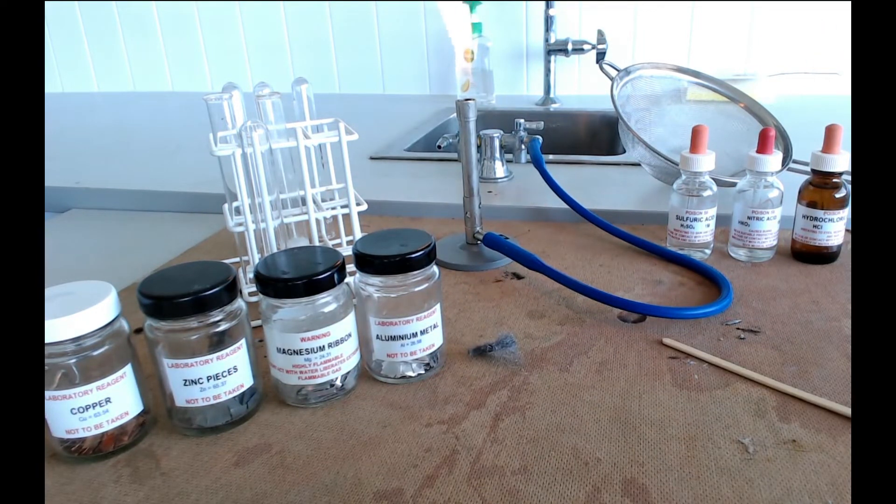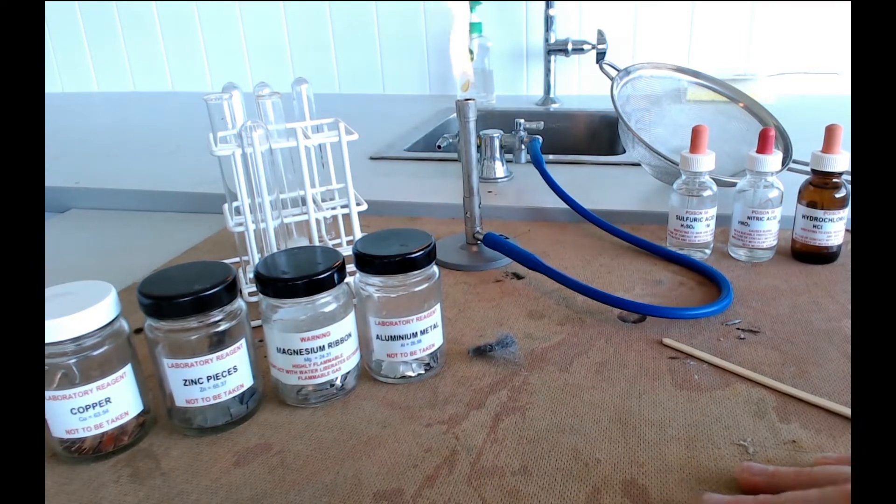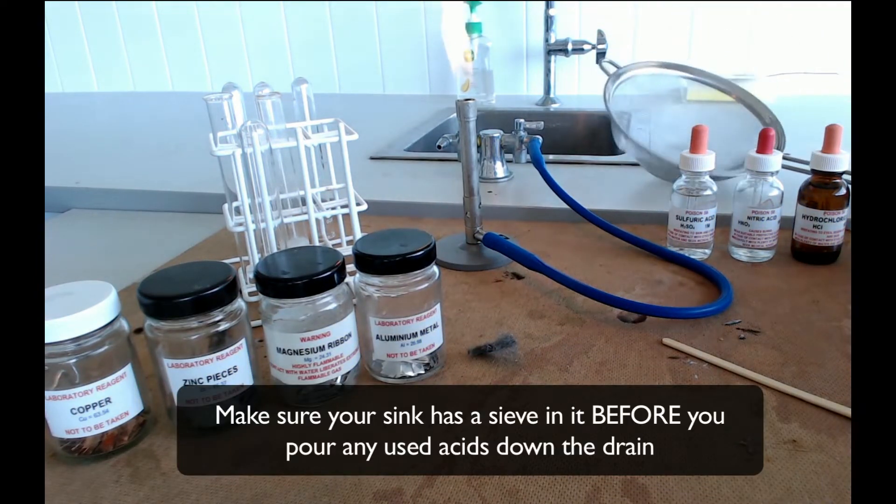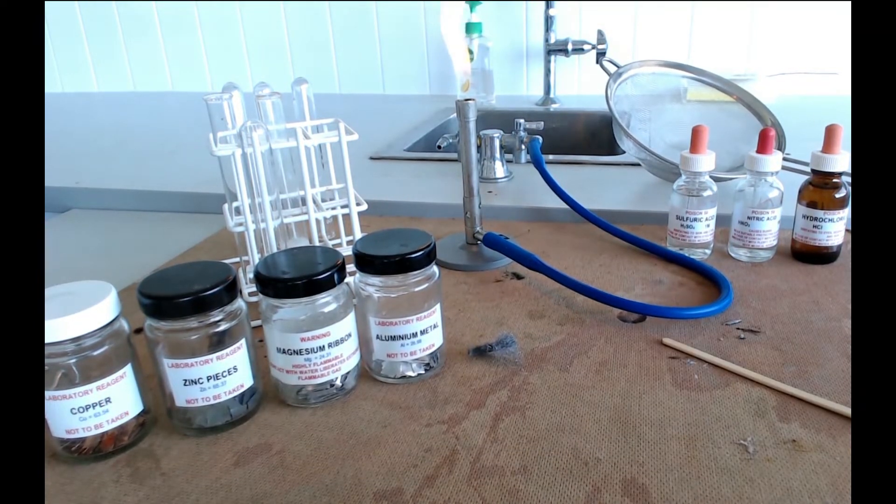And then the last two bits of equipment that we need are really just to keep things safe and tidy. We've got a heat mat here for when we're burning things. And we've got a sieve, and that's there so that when we empty our test tubes down the sink we can catch any unreacted pieces of metal.